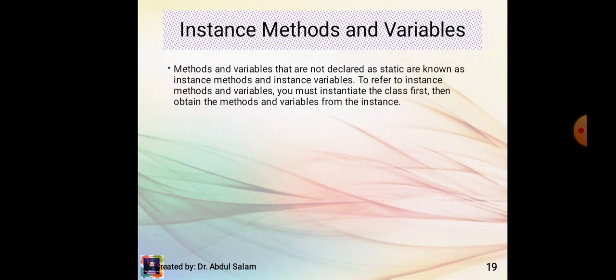Instance methods and variables: methods and variables that are not declared as static are known as instance methods and instance variables. To refer to instance methods and variables, you must instantiate the class first, then obtain the methods and variables from the instance.